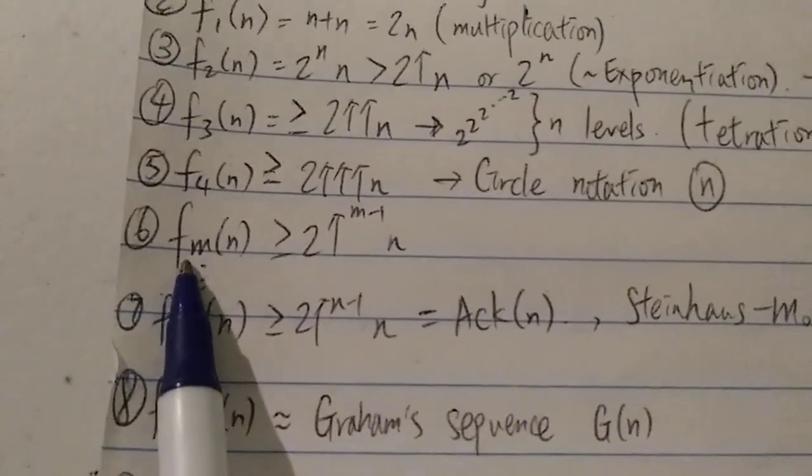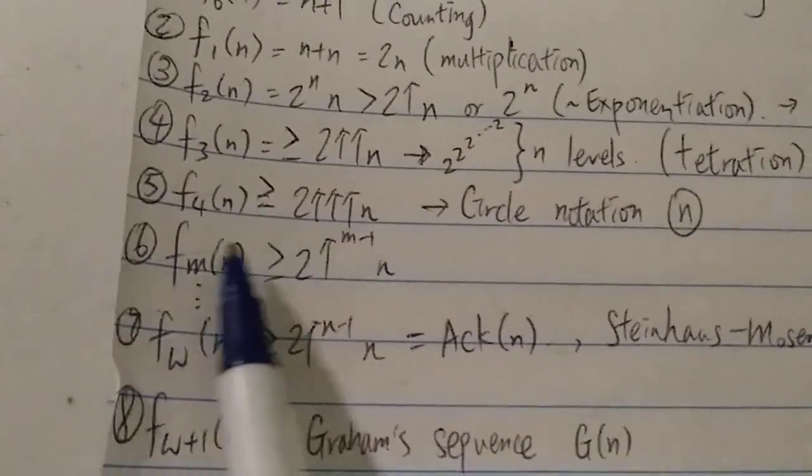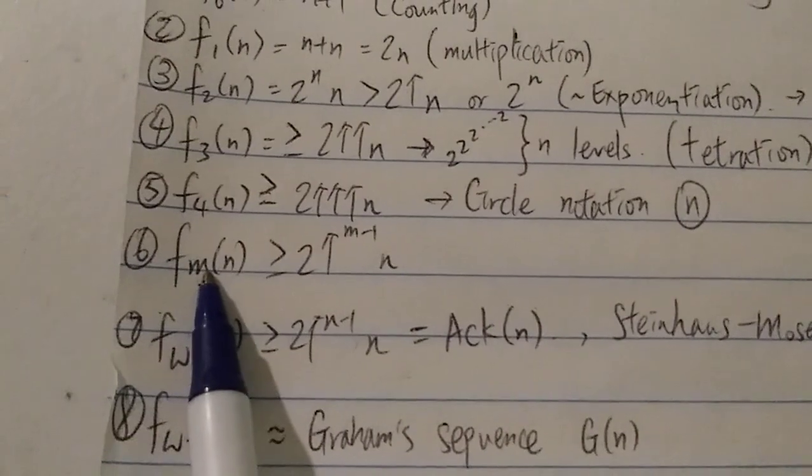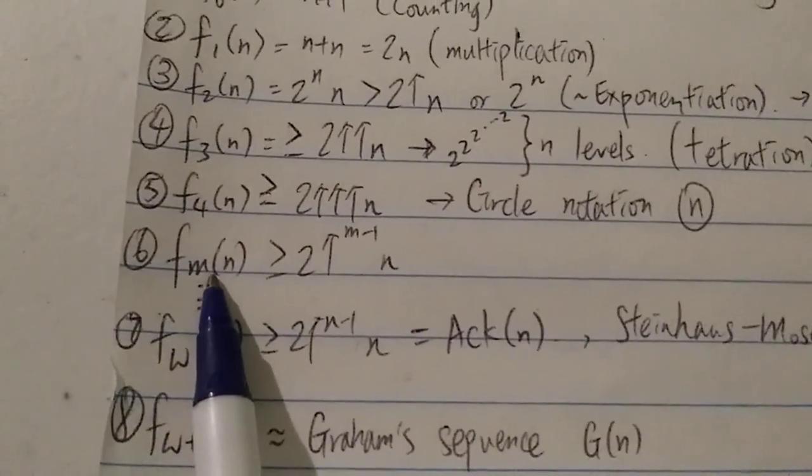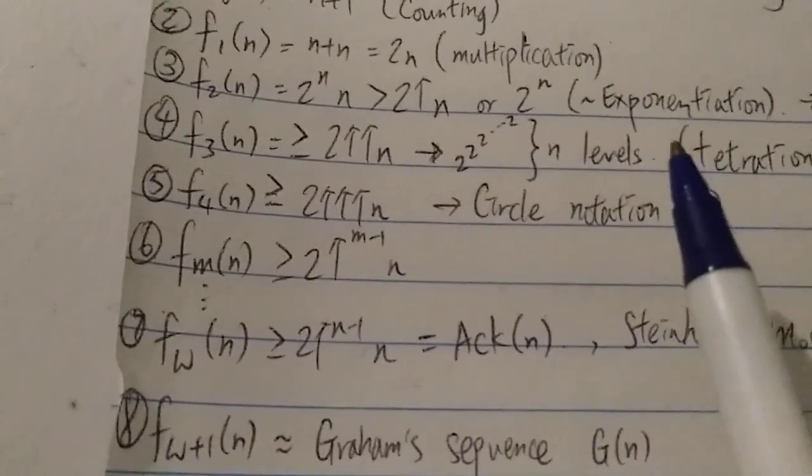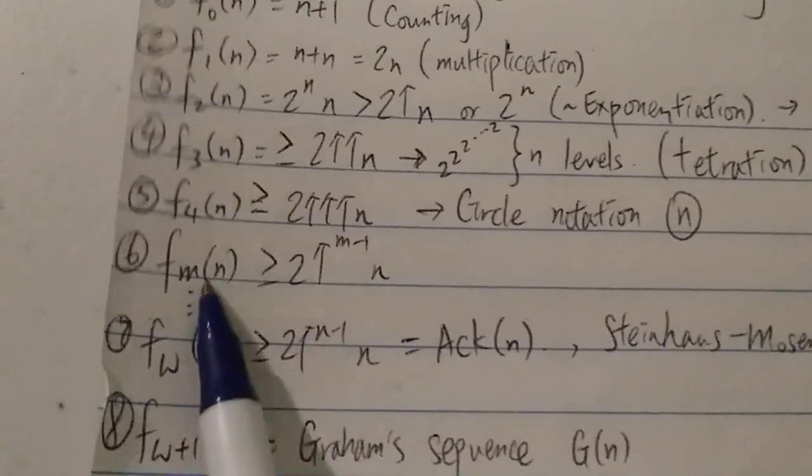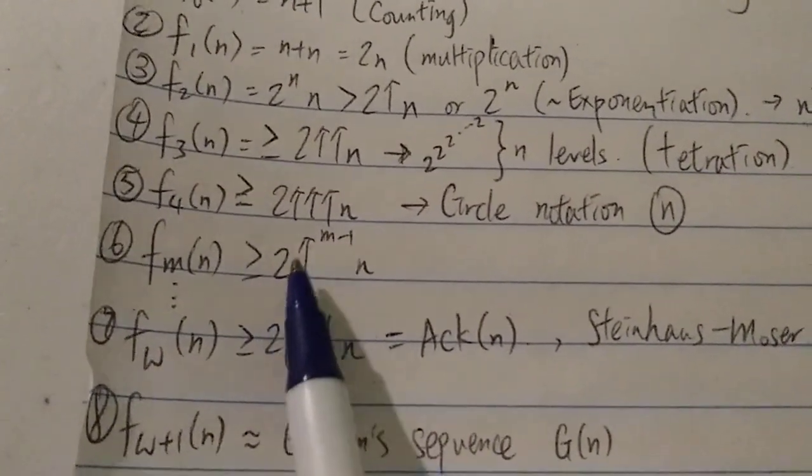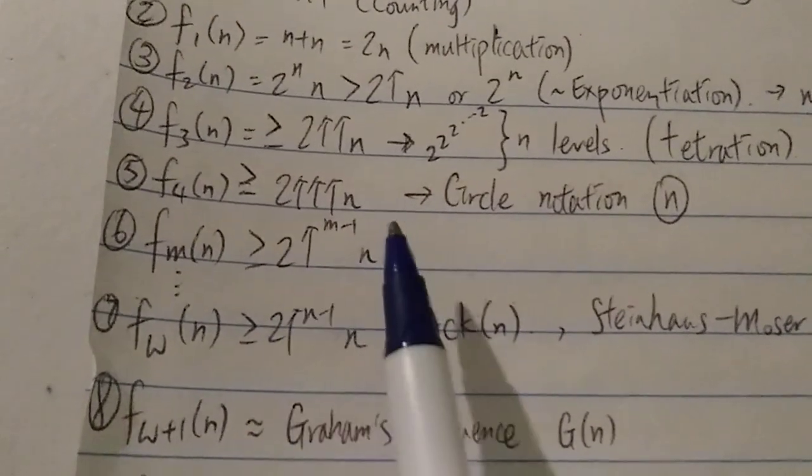And next, we have Fm(n). So basically, m here can represent any positive integers. For example, Graham's number or even 3↑↑↑↑3. And Fm(n) is greater than 2 with m-1 arrows, n.